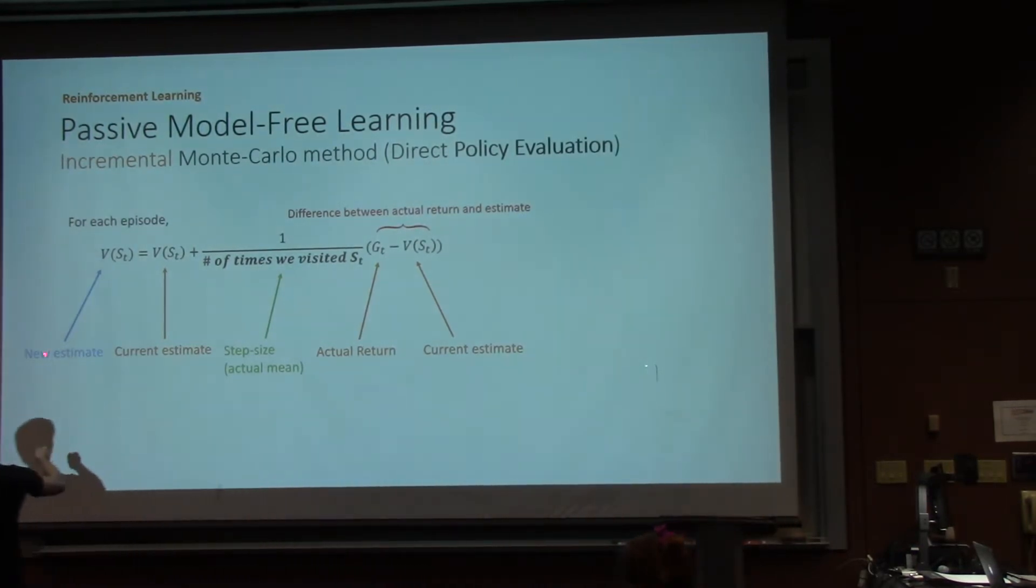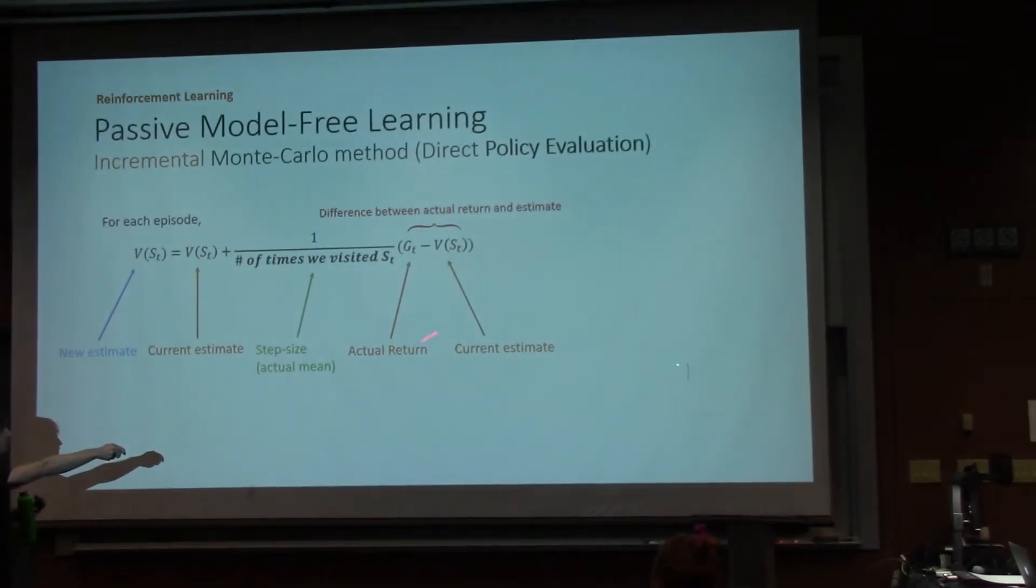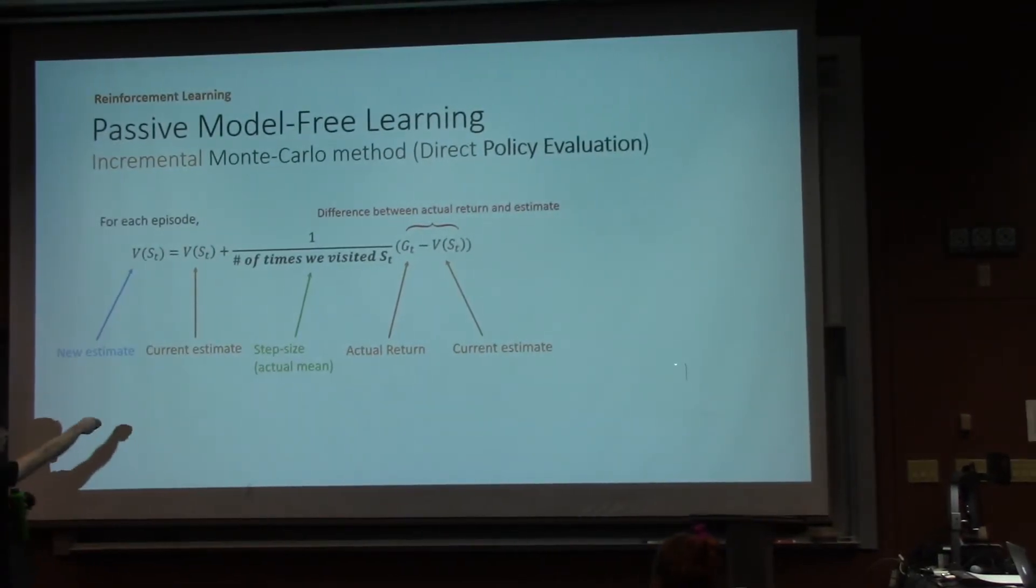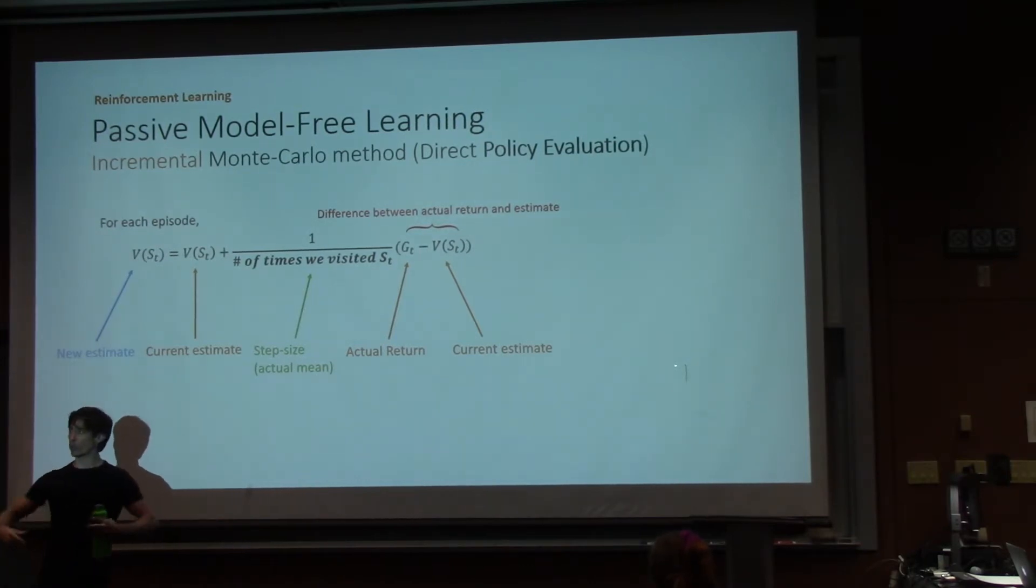Notice, to calculate our new estimate, we're taking our current estimate plus some step size, which in this case is going to be that small sum that we need to add to calculate the actual mean, times the actual return minus the current estimate. So here we have current estimate, current estimate, and actual return. Notice that what's inside of these parentheses here is the difference between the actual return that we got and what we thought we were going to get before we saw this episode.